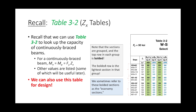You can probably guess how this is going to work. We're going to go to the table, find our required Zx or required Mp. We're not going to pick the W10 by 112 — we're going to pick the W24 by 62, because the W24 by 62 is lighter. There's no reason to select a heavier section when a lighter one works.